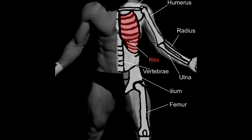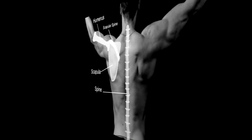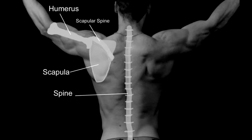Let's take a look at your ribs. You have 24 ribs, 12 on each side. The first seven are considered to be true ribs because they attach directly to the sternum. The other five are considered false ribs because they do not directly attach to the sternum. In fact, two ribs — your floating ribs — don't attach to the sternum at all.